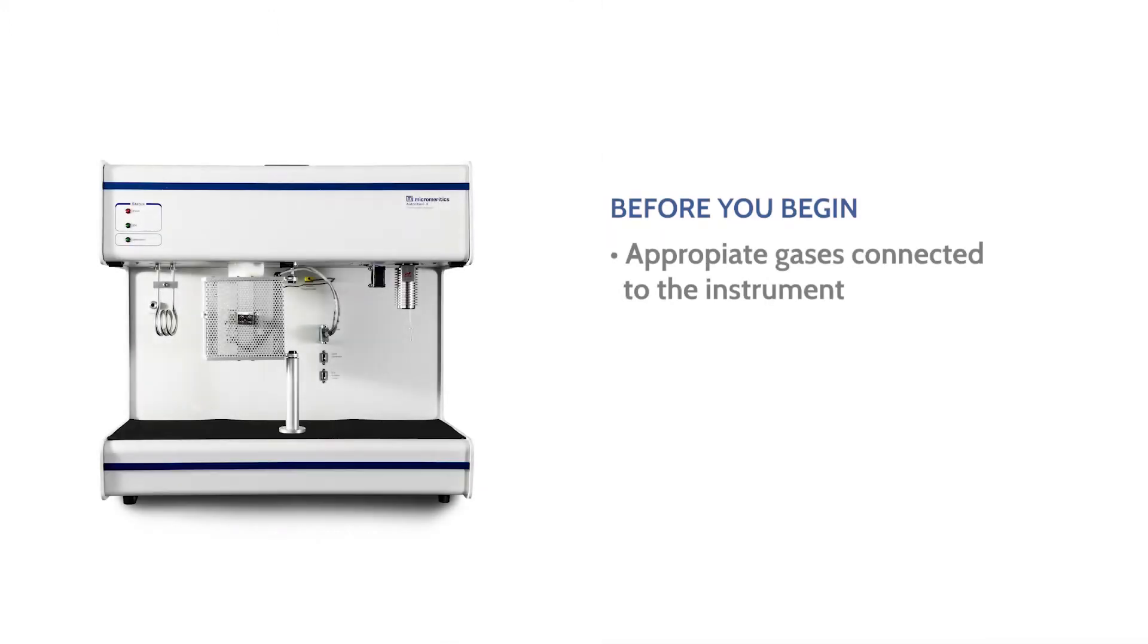Then make sure the loop is calibrated, as the pulse chemisorption uses the loop volume for calculations. Please refer to the AutoChem 2 loop volume calibration video demonstration for more information.